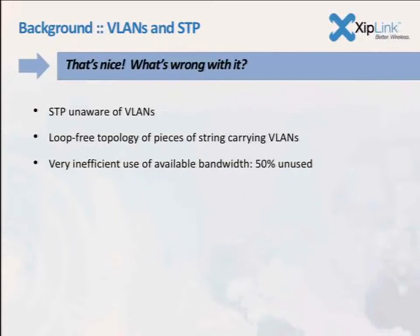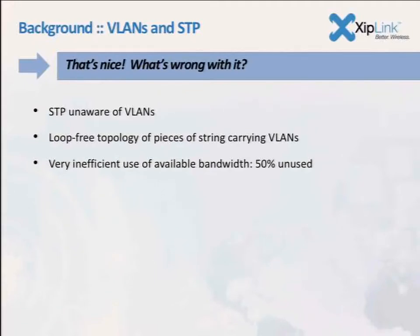What's wrong with it? VLANs — that's what's wrong. The spanning tree protocol operates only on pieces of string and doesn't know anything about VLANs. If you've got an Ethernet with 500 VLANs, all 500 VLANs will share the same active topology, meaning 50% of your bandwidth is unused. You could put 250 VLANs on one link and 250 on another, and there would still be a loop-free topology for each.